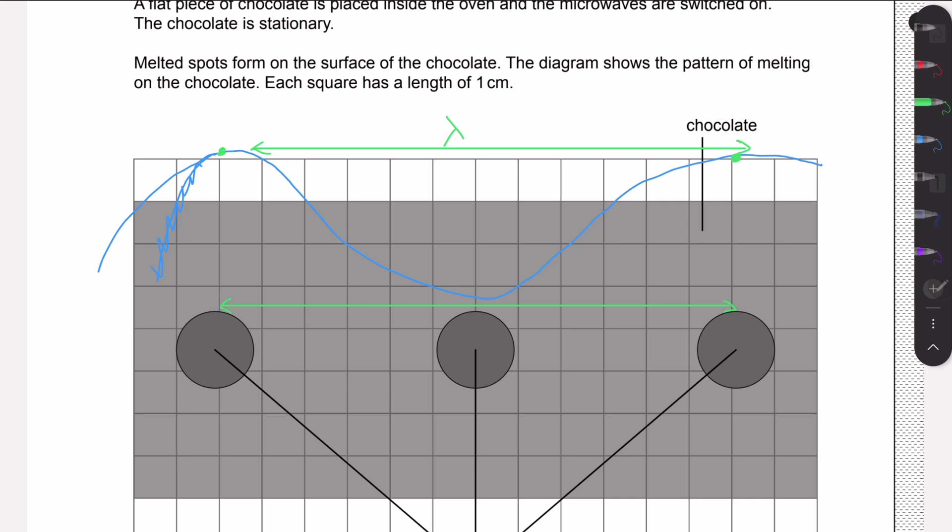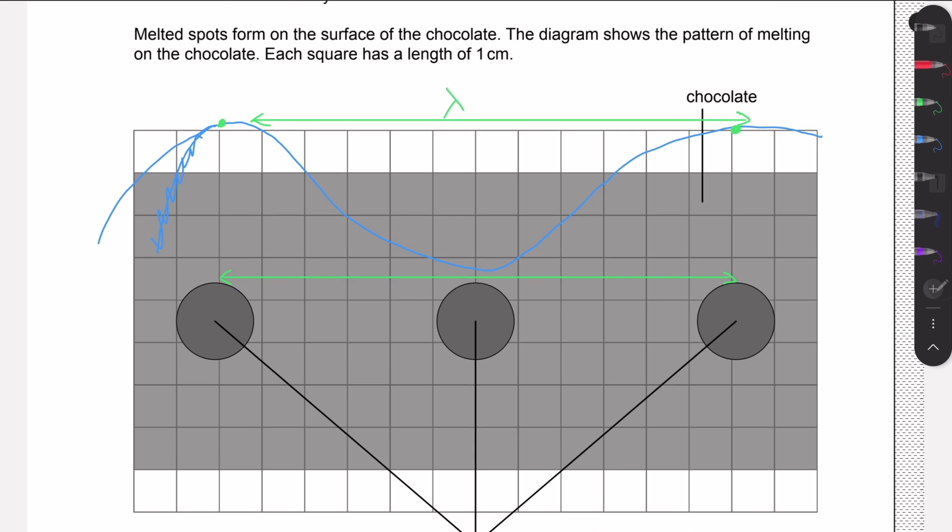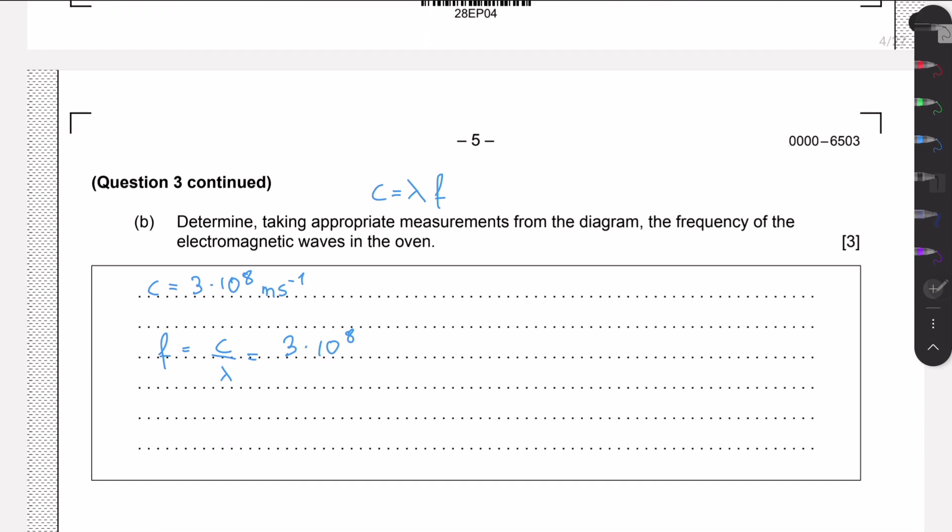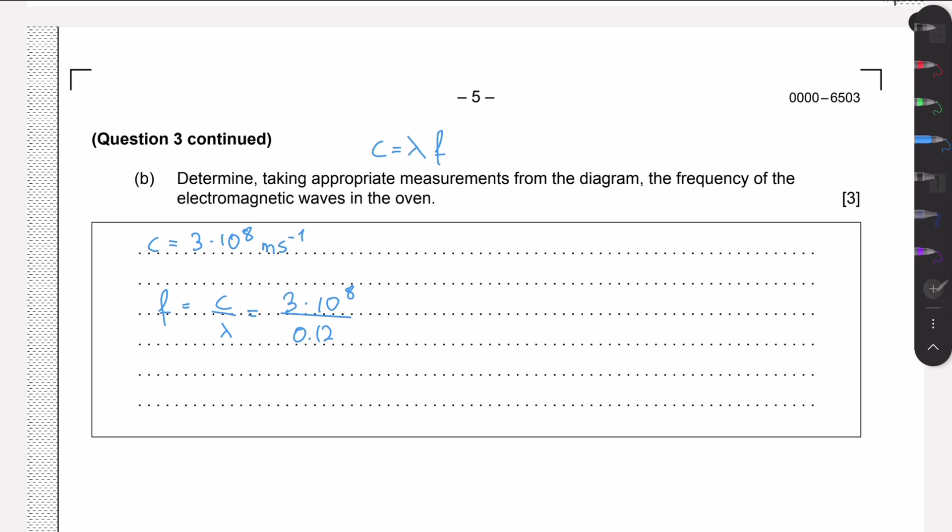If we count these squares we have 1, 2, 3, 4, 5, 6, 7, 8, 9, 10, 11, 12. One square is one centimeter, so 12 squares is 12 centimeters. We just have to divide by 0.12 as we want meters. Then we will get a frequency of 2.5 times 10 to the 9 hertz.